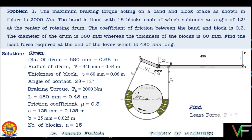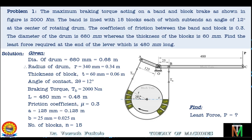As distance A is greater than B, the force P must be applied at C downwards. The force P will be least if the end of the band attached to A is slack and the end attached to B is tight. This is only possible if the drum rotates in the clockwise direction.